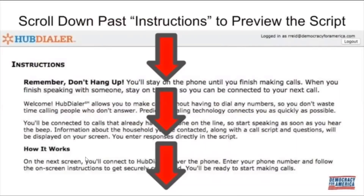Review the script and get comfortable with it — we're going to be using this script to talk to voters. These are likely Democratic supporters who are slightly less likely to vote without a friendly reminder from you. We want to do a few things with these calls. First, we want to identify who they're supporting and track it accurately — whether they're supporting our progressive candidate, undecided, or opposing.